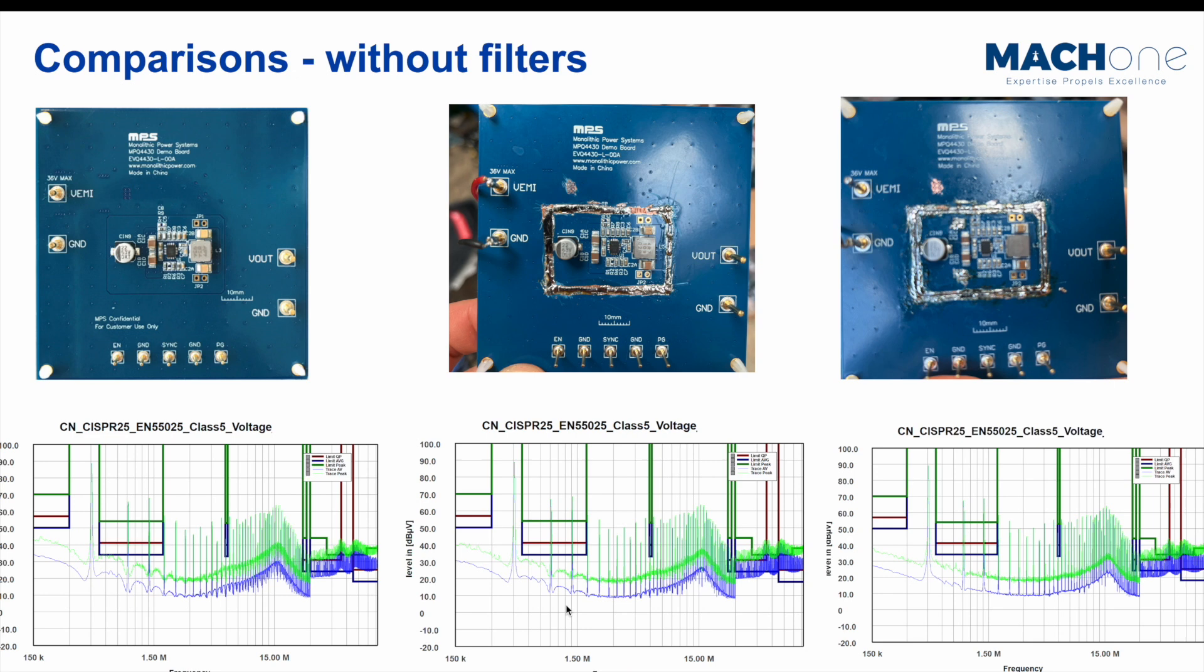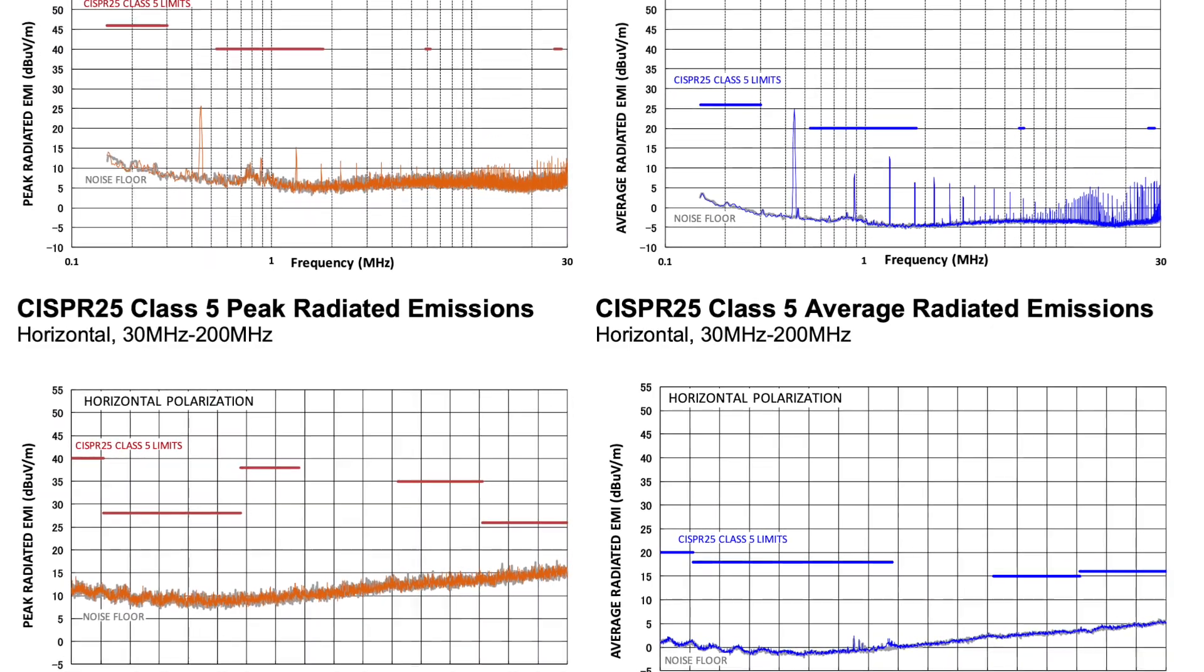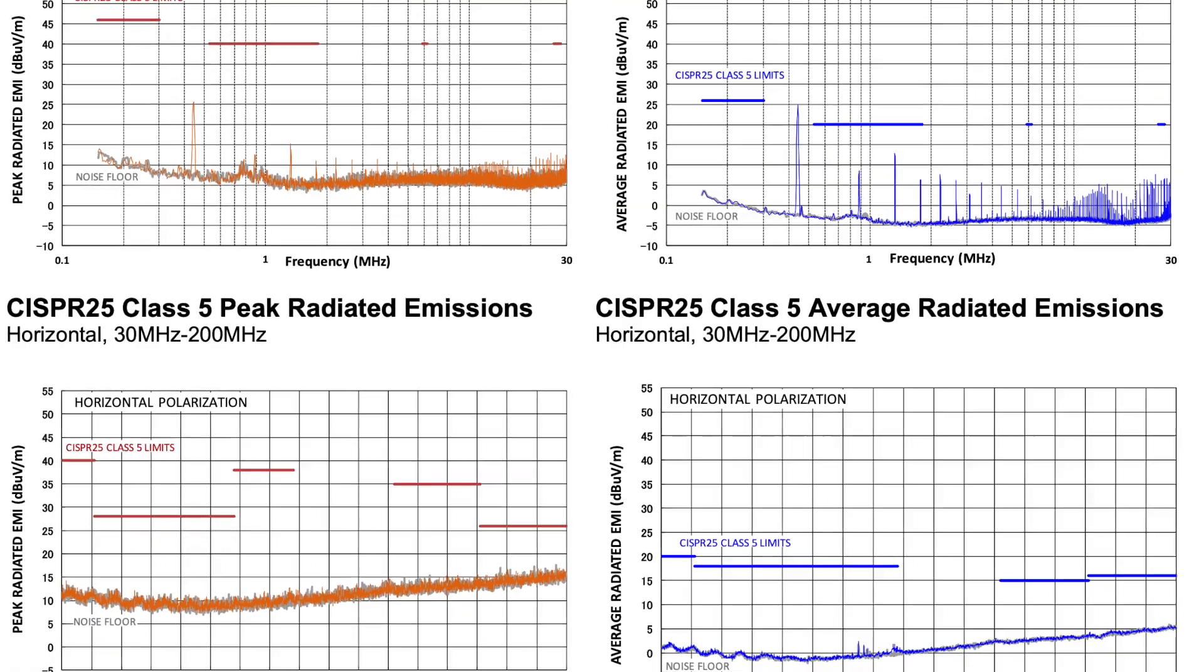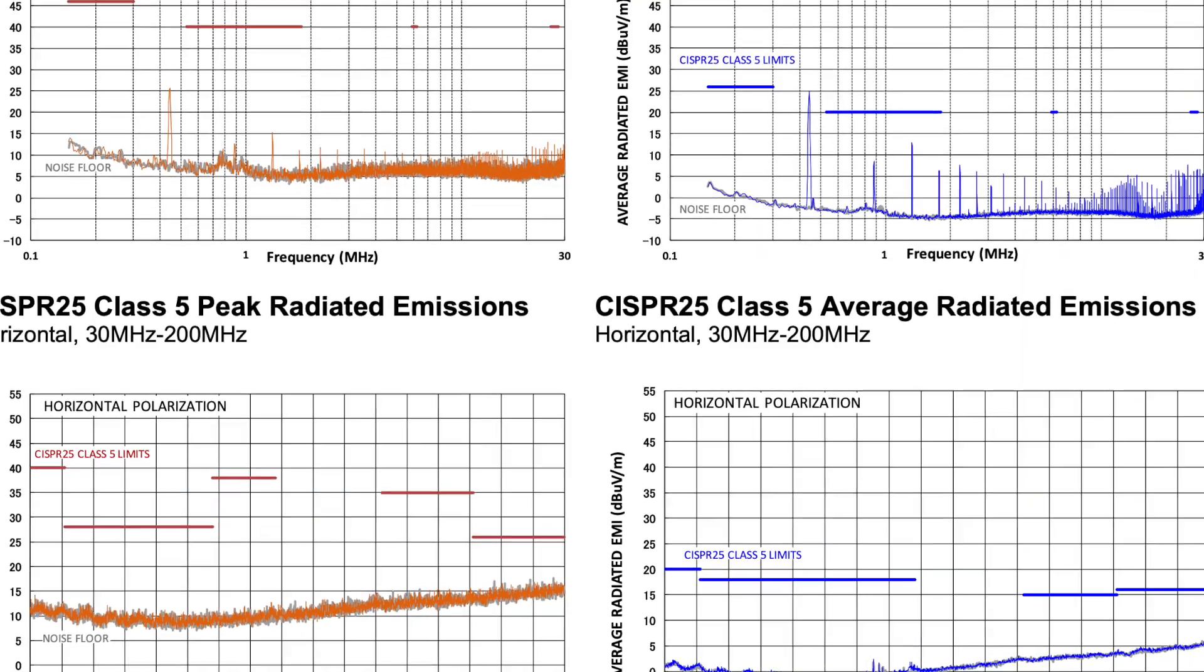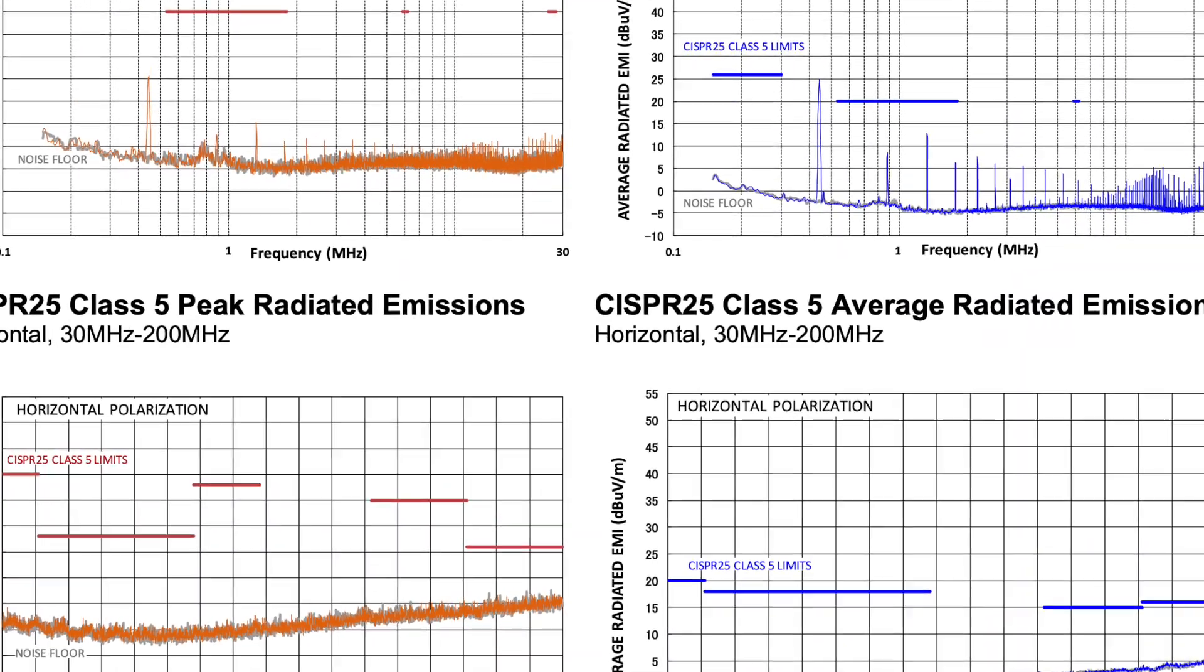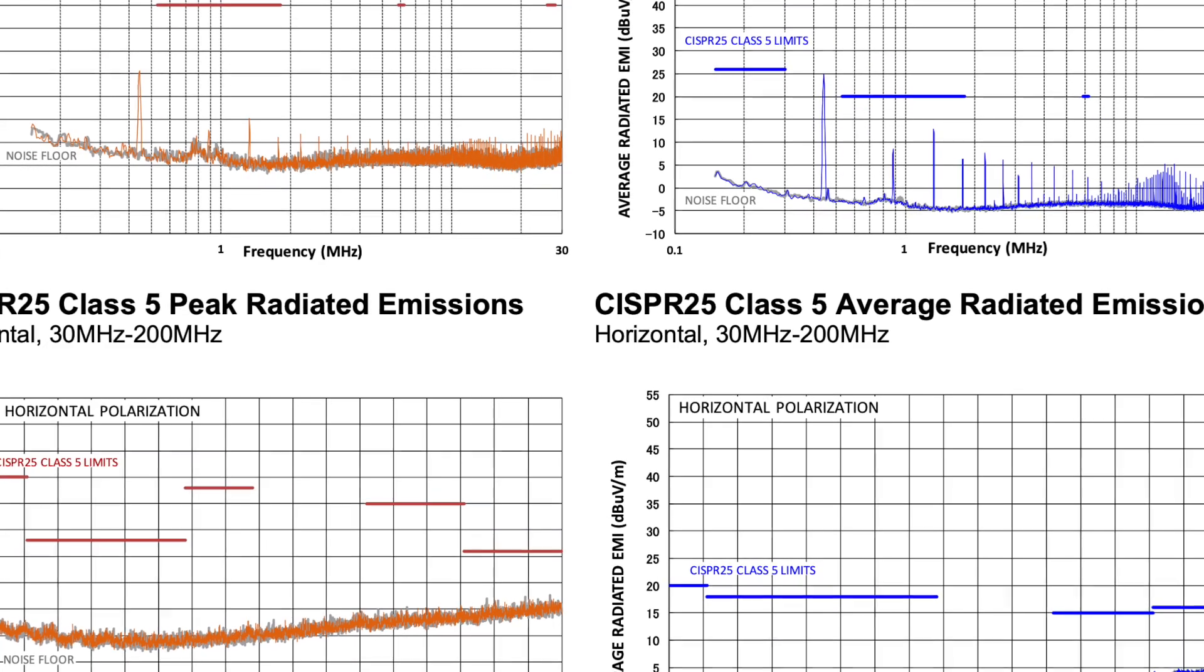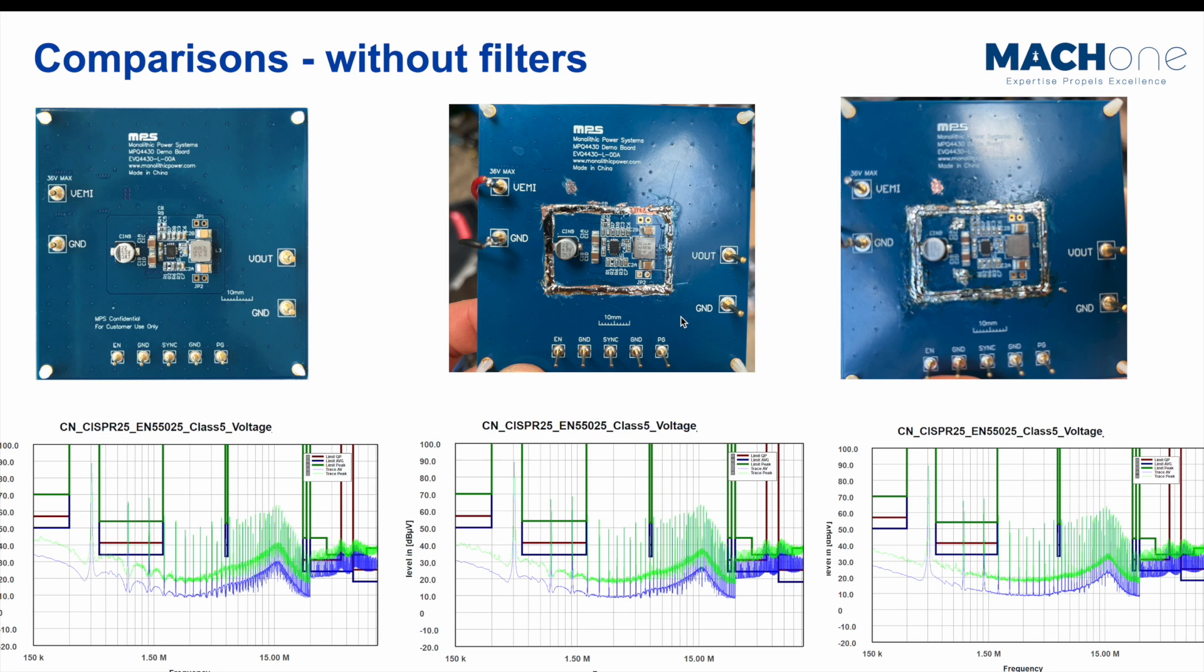It's also interesting to know that the big difference between with filter and without filter, then you understand the fact that this EVM, this evaluation board, performs so good in terms of the radiated emission and conducted emission mainly due to these two-stage filters. Without these filters, you can do all sorts of grounds - separate or continuous grounds - the emissions are always high. So you rely on the filter configurations.